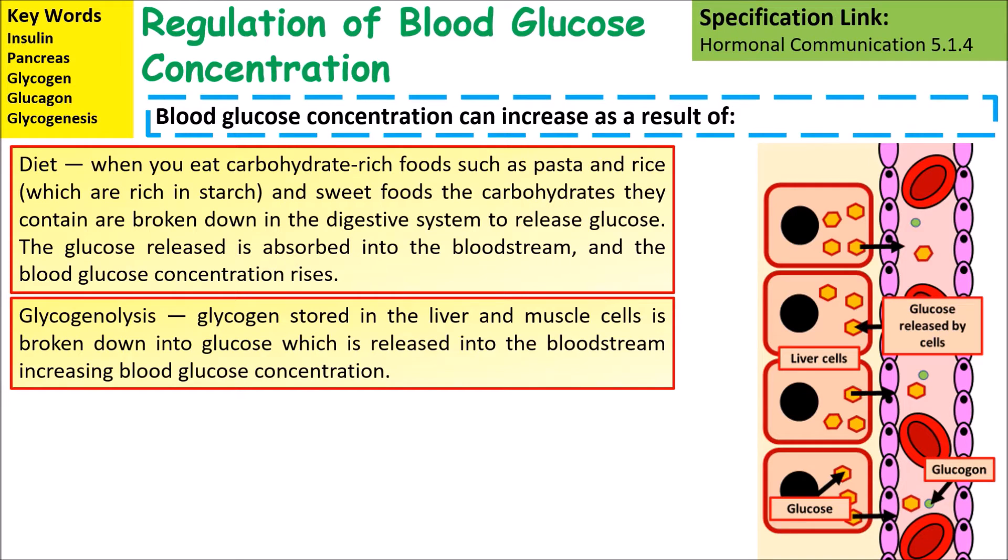Glycogenolysis: glycogen stored in the liver and muscle cells can be broken down into glucose, which is released into the bloodstream, increasing the blood glucose concentration.